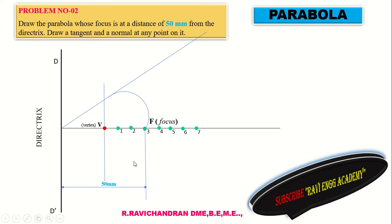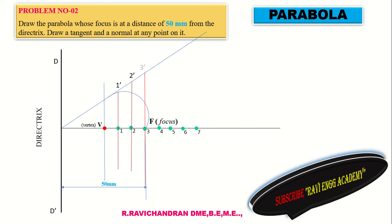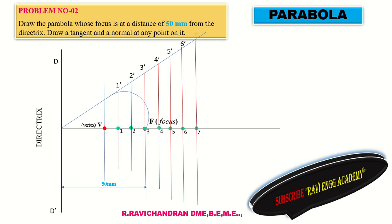Drop multiple vertical lines parallel to the directrix. For point one-dash, place the vertical line and mark one-dash. For two-dash, drop two-dash. For three-dash, drop three-dash. Follow the same procedure for four-dash, five-dash, six-dash, and seven-dash. Drop a total of ten vertical lines across the construction. Each line is spaced one centimeter apart - mark 1-1 centimeter intervals.